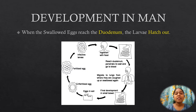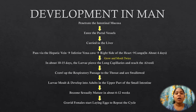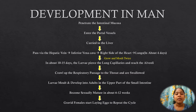Development in man. When the swallowed eggs reach the duodenum, the larvae hatch out. The rhabditiform larva is about 250 microns in length and 14 microns in diameter, and is actively motile. The adult worm has a lifespan of 12 to 20 months. The rhabditiform larva penetrates the intestinal mucosa, enters the portal vessels, and is carried to the liver. It then passes via the hepatic vein to the inferior vena cava, entering the right side of the heart, and further enters the lungs in about four days, where it grows and molts twice.